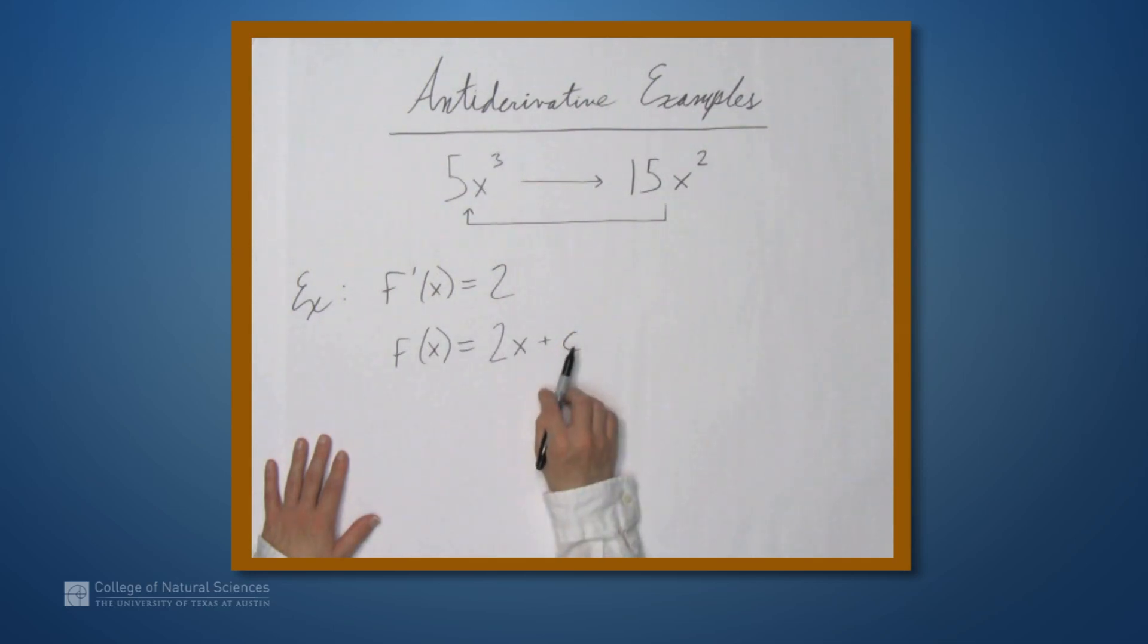Because we know that adding a constant to a function doesn't change the derivative. The derivative of 2x becomes 2, and the derivative of c, no matter what c is, is 0. So the general form of the antiderivative of f' equals 2 is f = 2x + c.